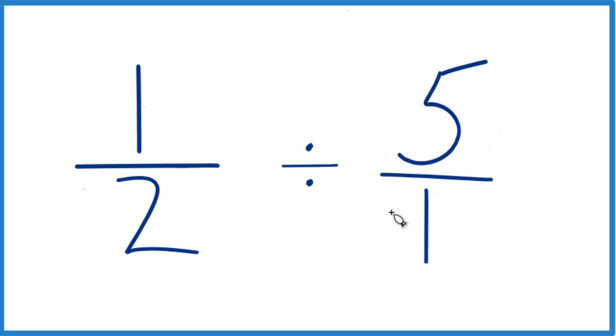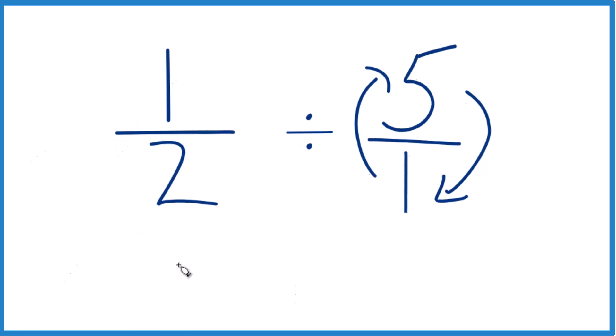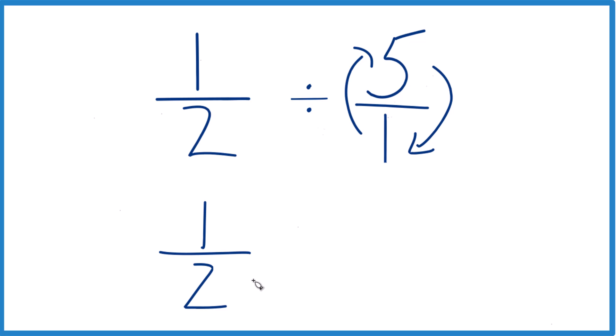Then, we're going to take the reciprocal of 5 over 1, move 1 to the top, 5 down here. That'll give us the reciprocal, because then we can say 1 half. Instead of division, we're going to multiply by that reciprocal.